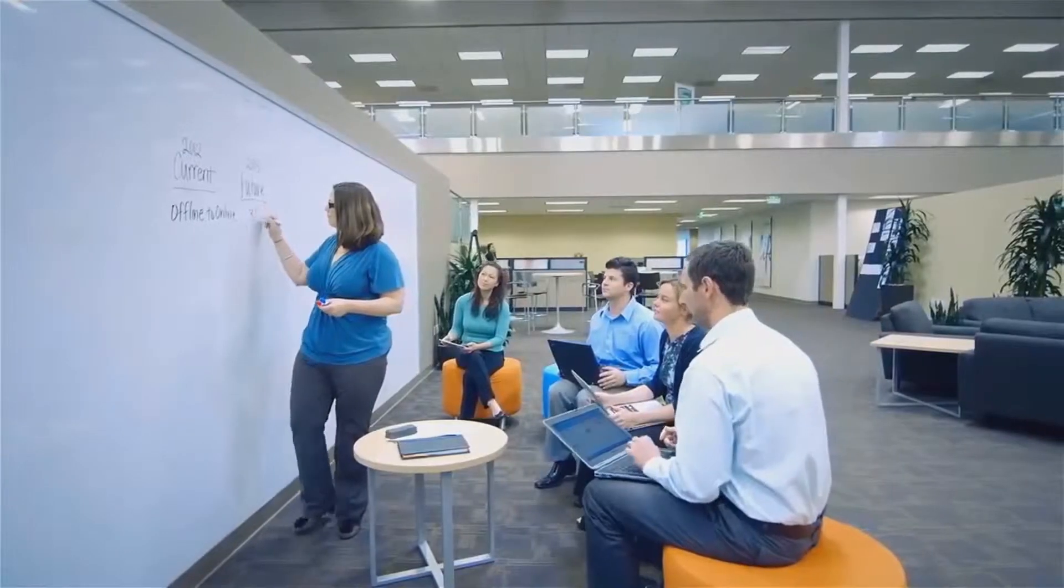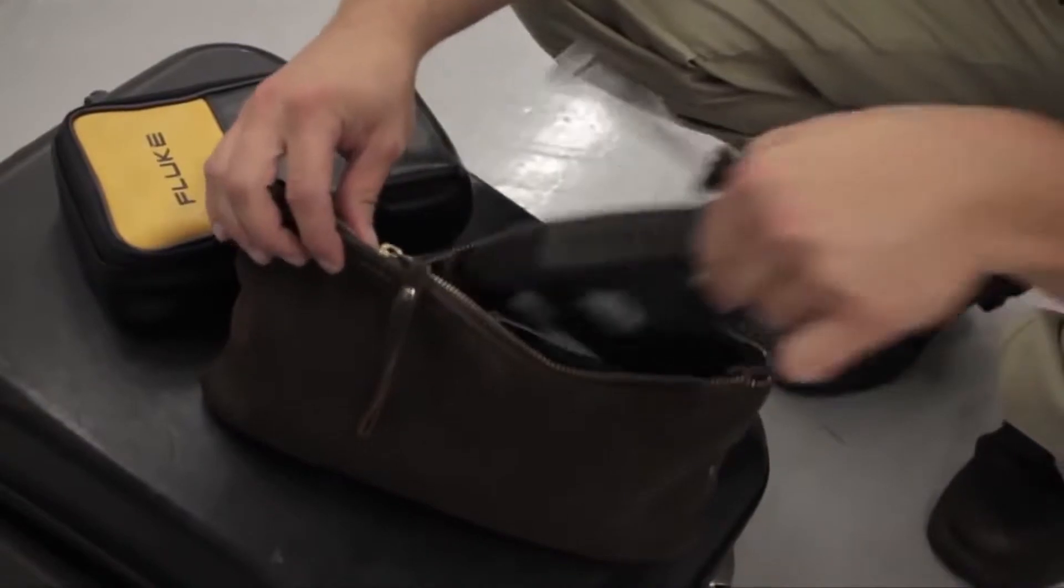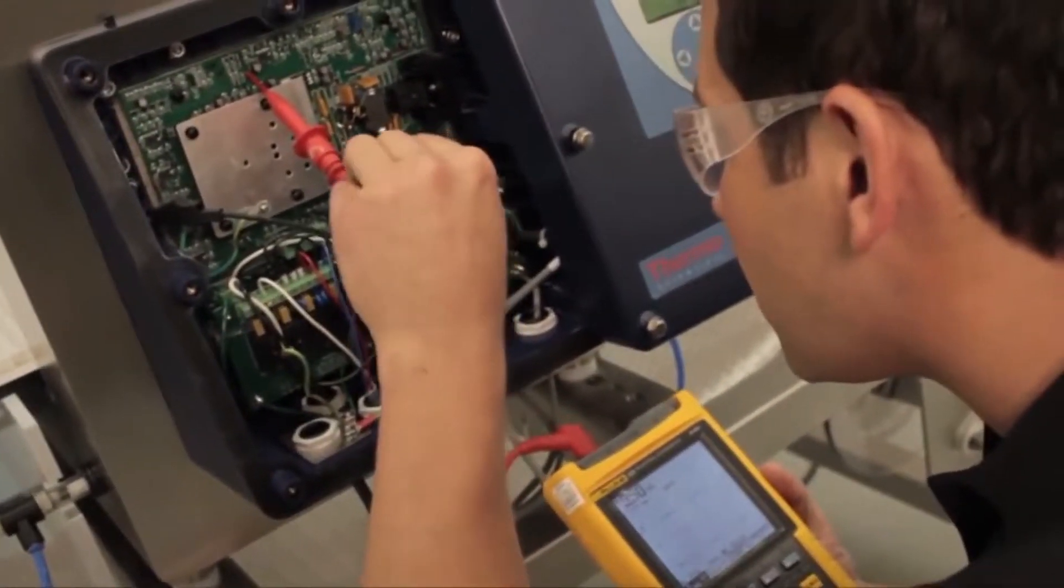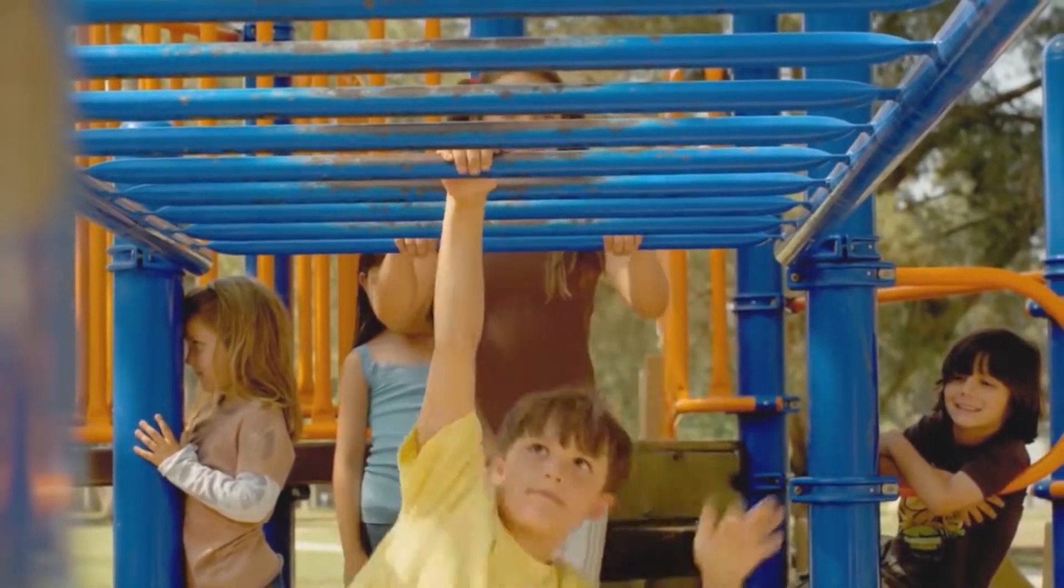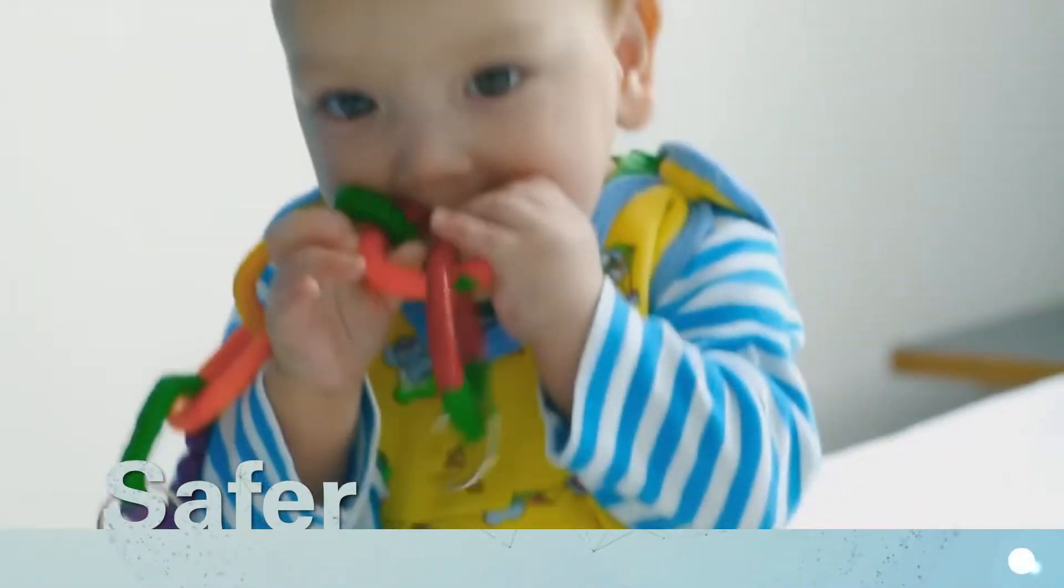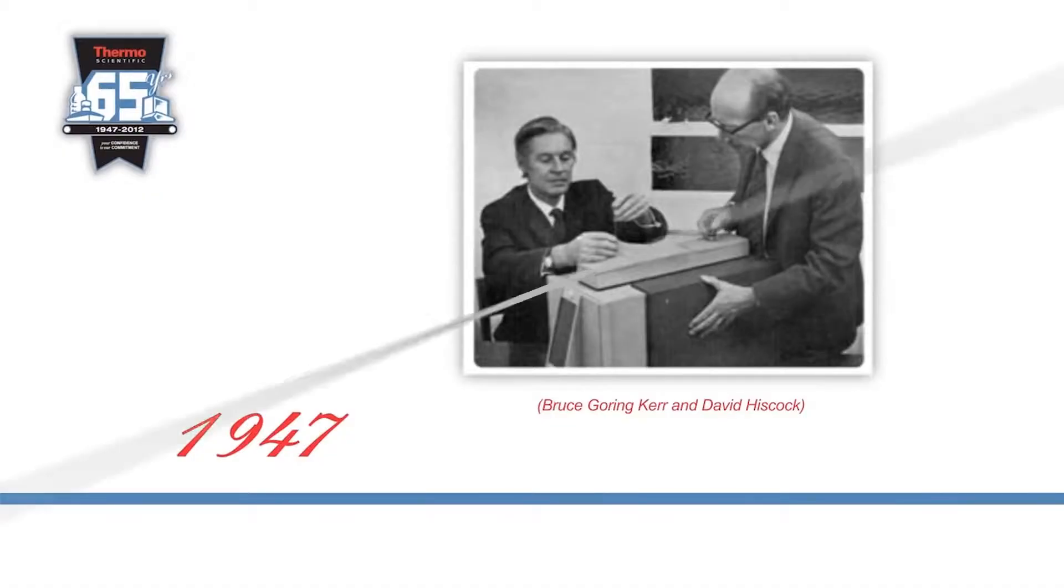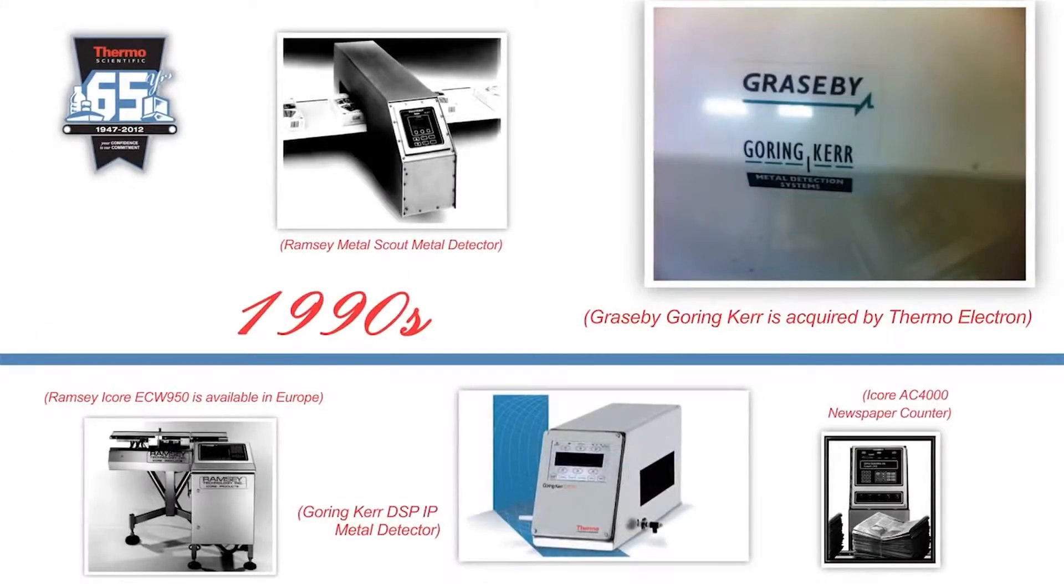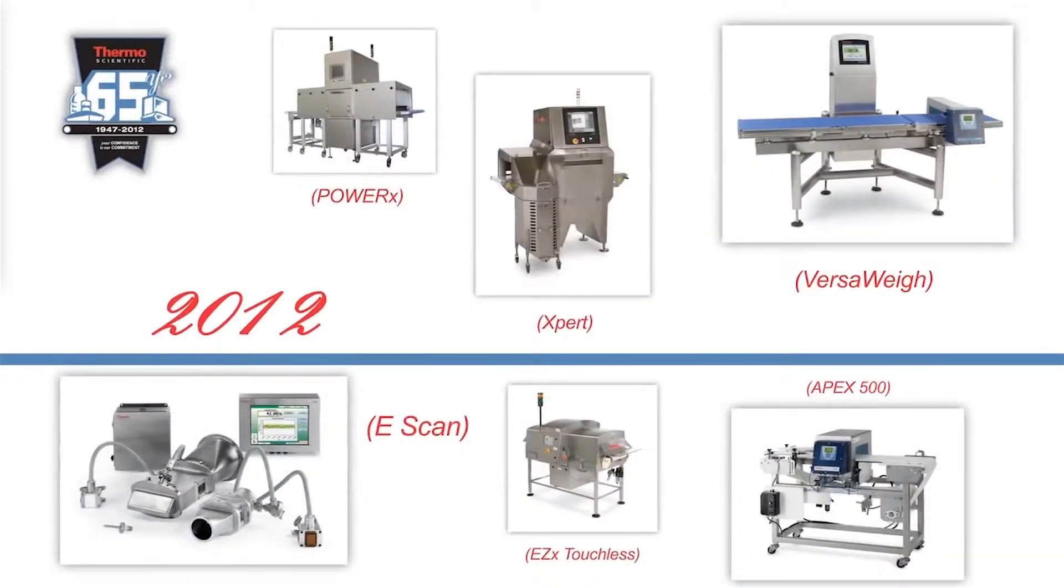You can't afford surprises inside. That's where Thermo Scientific product inspection solutions come in. Our company is 50,000 employees strong, we operate in 50 countries worldwide, and our mission is to make the world healthier, cleaner, and safer. We have deep expertise and insights in packaged product inspection developed over decades across tens of thousands of installations in food and pharma.